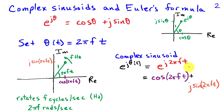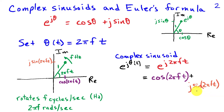Using Euler's formula, this complex sinusoid consists of two terms: a cosine that represents the real portion of the complex sinusoid, and a sine of the same frequency that represents the imaginary portion.